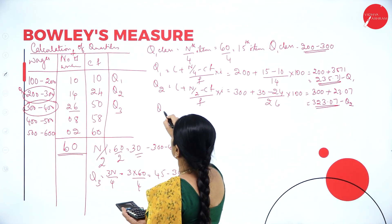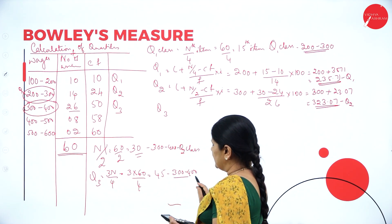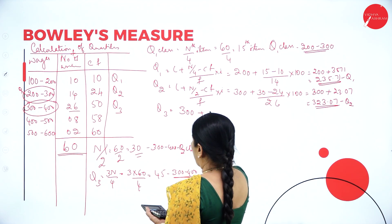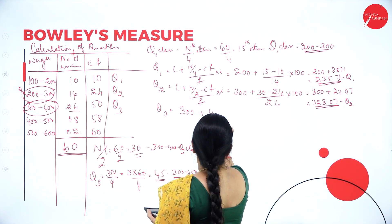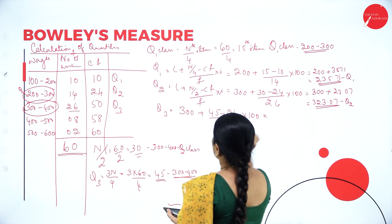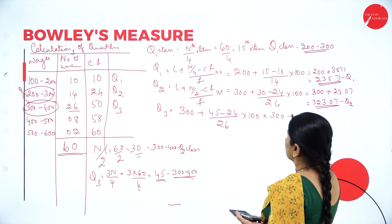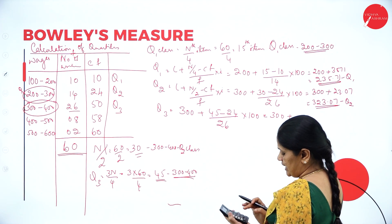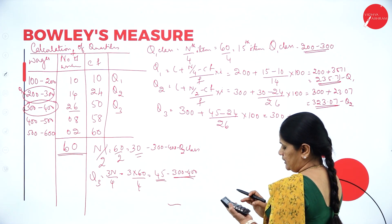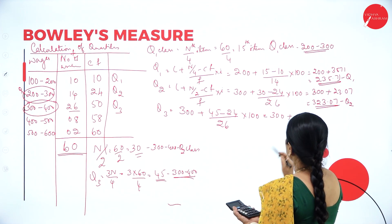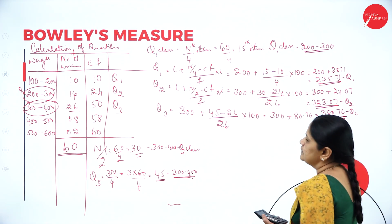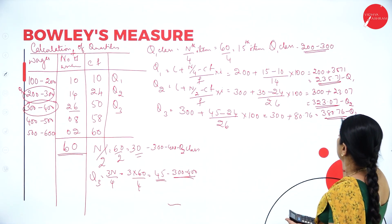For Q3, using 3N by 4 = 45, the Q3 class is again 300 to 400. So Q3 = 300 + (45 − 24) / 26 × 100 = 300 + 21 × 100 / 26 = 300 + 80.76 = 380.76.